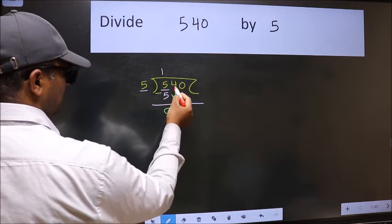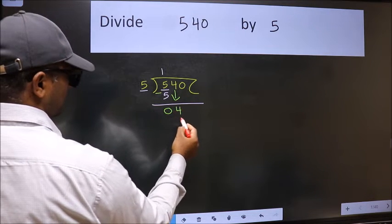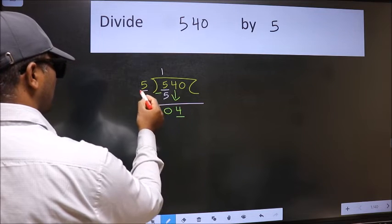After this, bring down the beside number. So 4 down. Now here we have 4 and here 5.